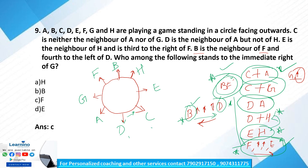With all positions filled, the person to the immediate right of G is F — option C. For questions like this, first apply all definite clues by placing members in the circle, then use the indefinite (negative) clues to eliminate and finalize positions.